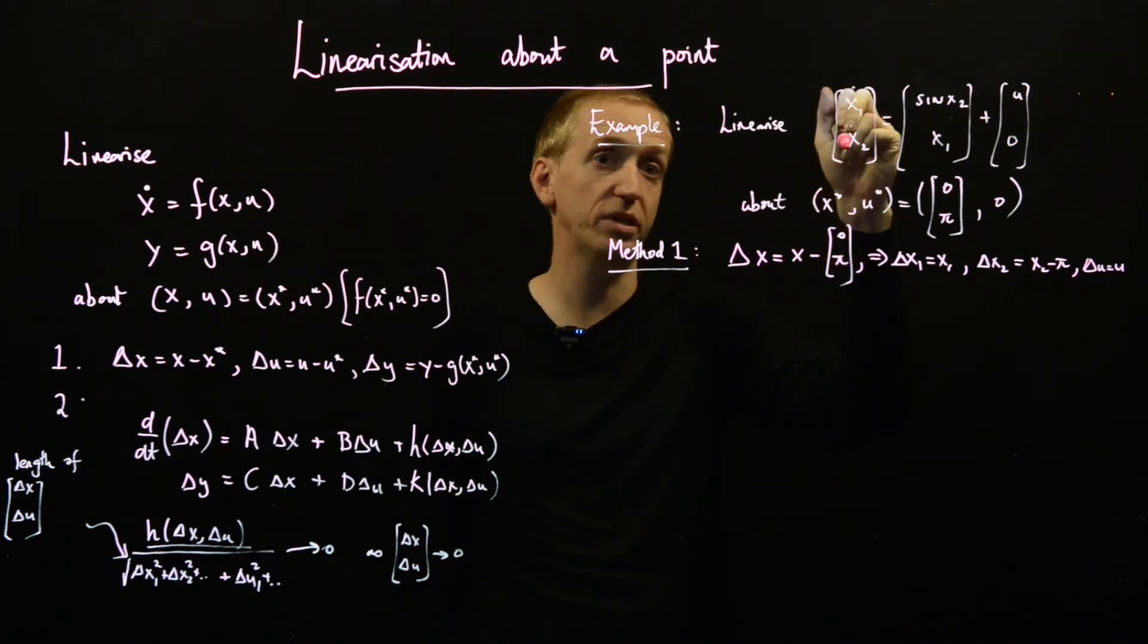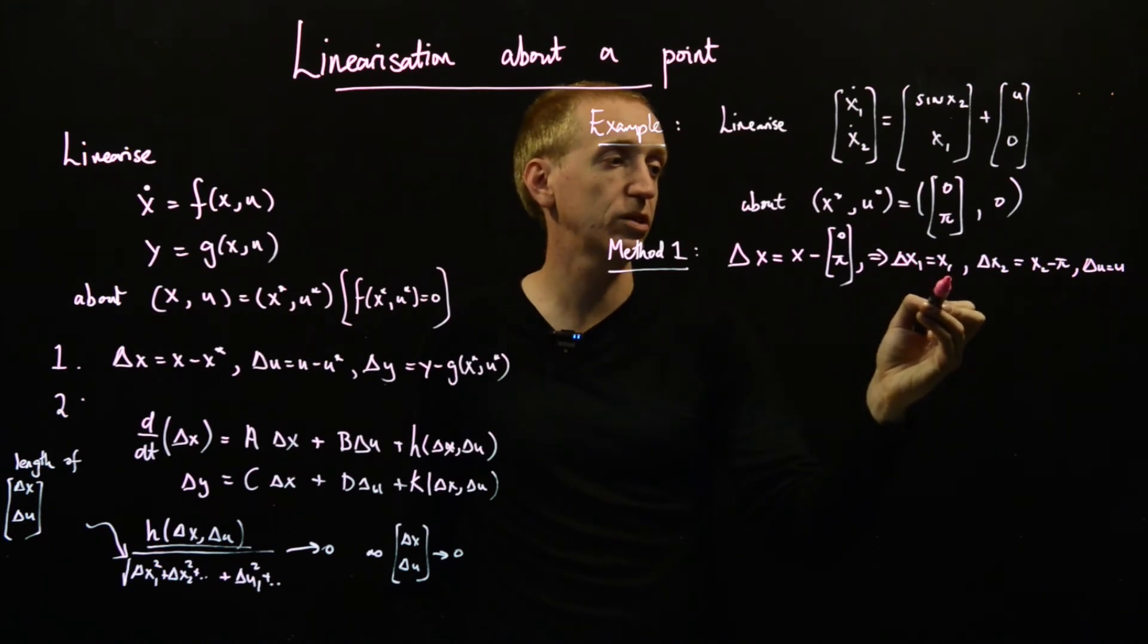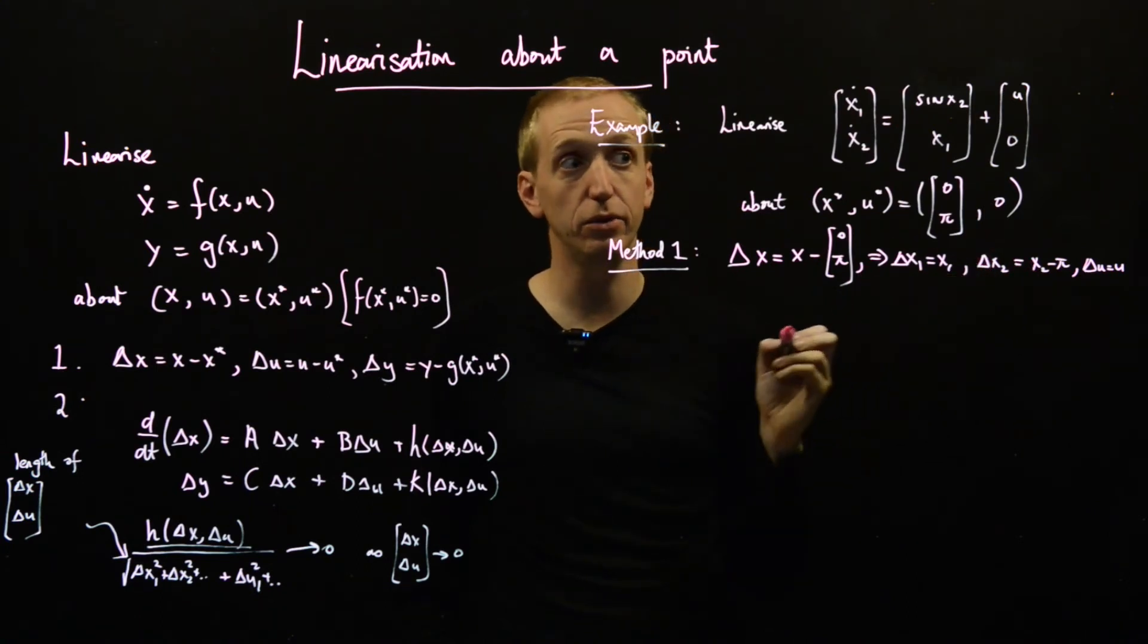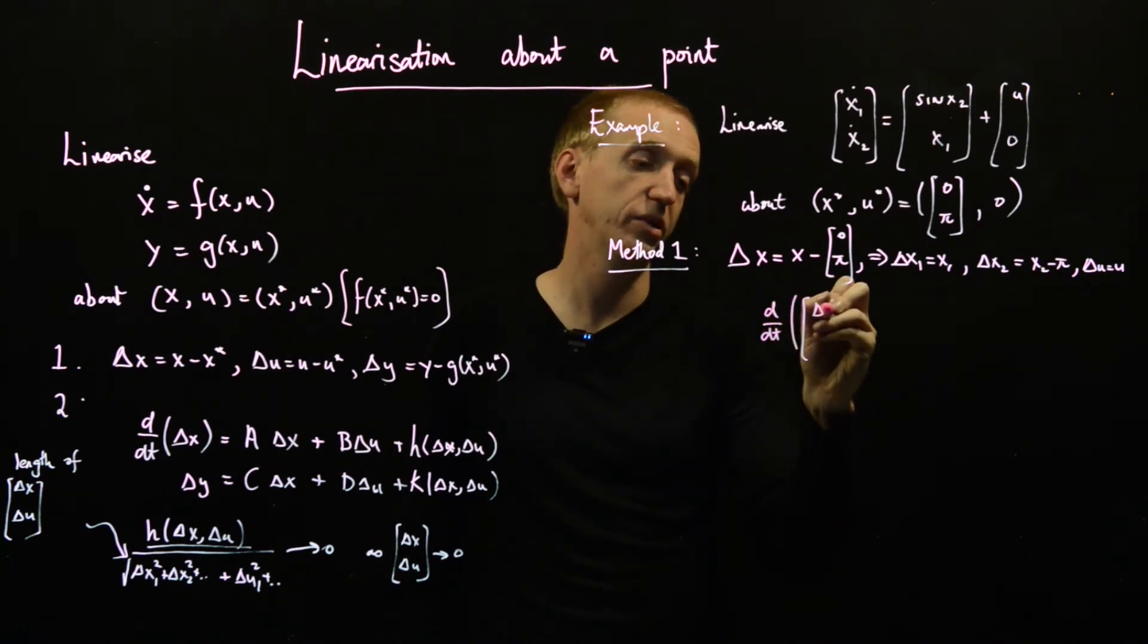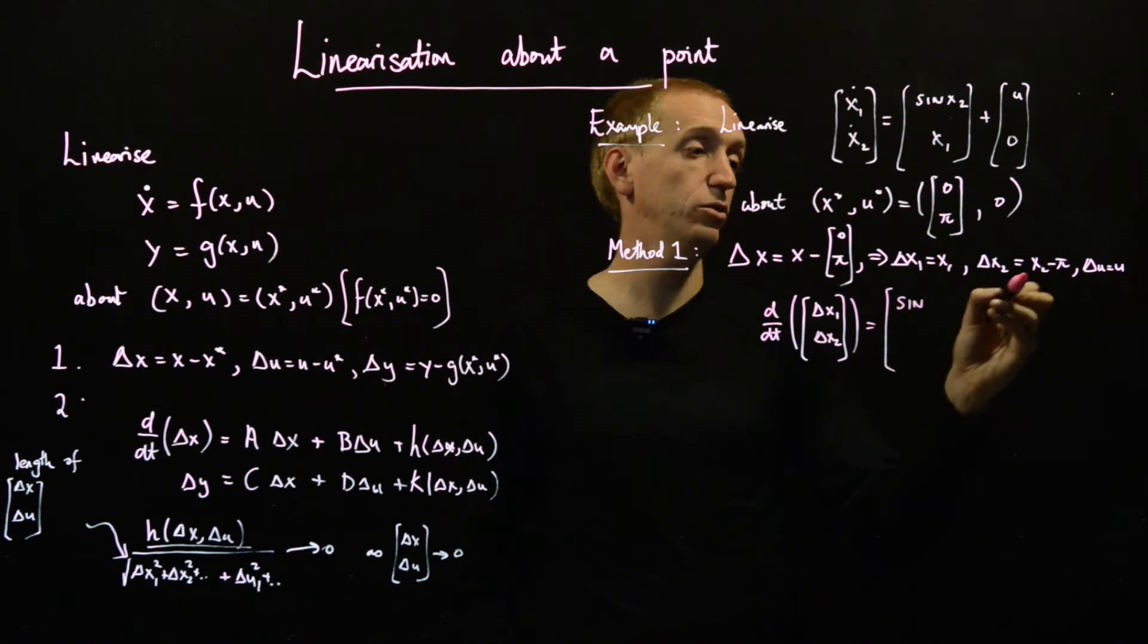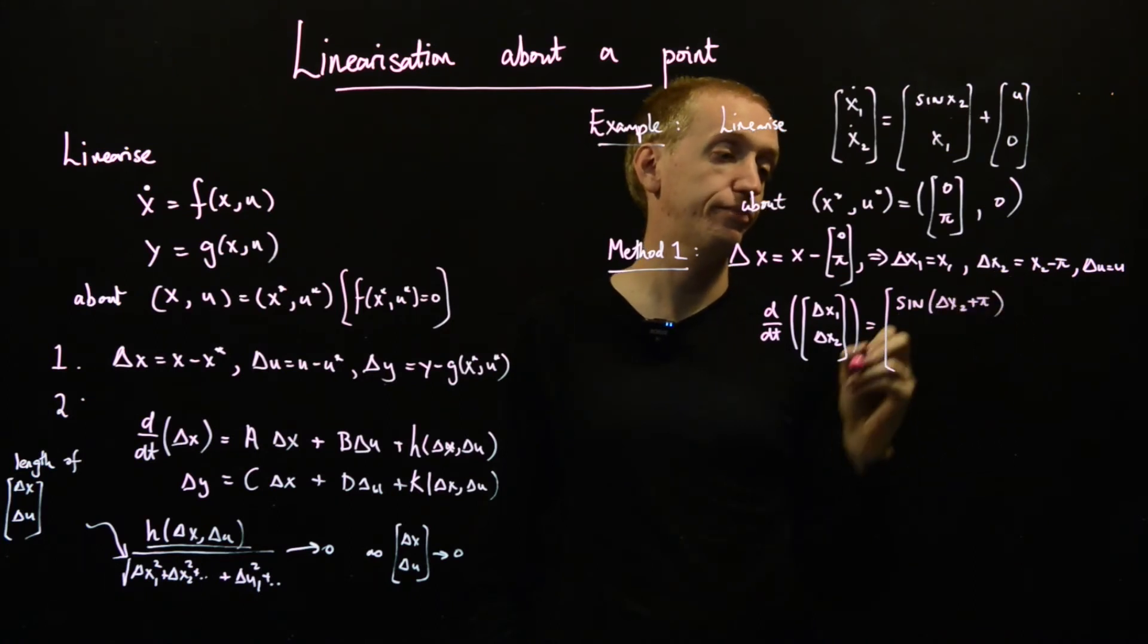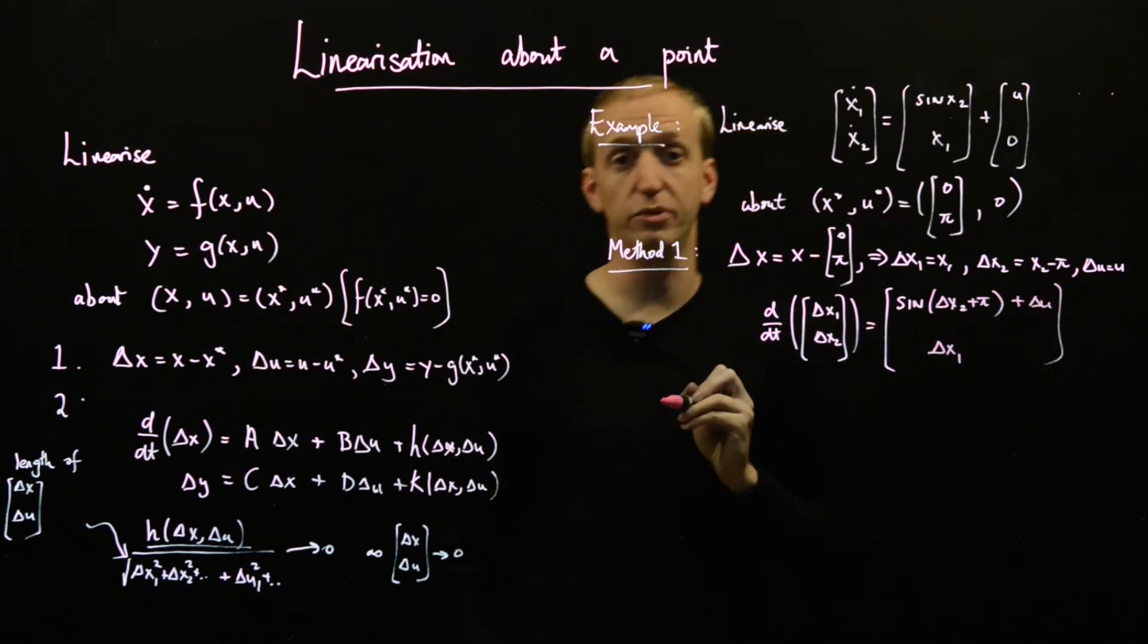Fine, we've got our delta variables. Now we just dump them in our equation, and we simplify. And so what do we get? Well, first of all, we substitute in our x dot variables. So delta x1 dot is equal to x1 dot. And similarly, differentiating this equation shows that delta x2 dot is equal to x2 dot. So here we have d by dt, we substitute in the x1 dot and x2 dot and get this. And this is just equal to sine of x2, but x2 is delta x2 plus pi. So that's sine of delta x2 plus pi. And then here we've just got delta x1 and delta u. So we substitute it in.